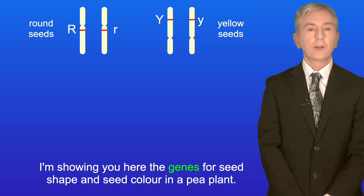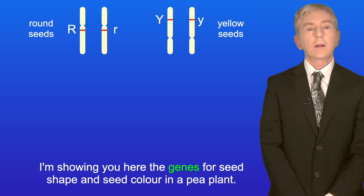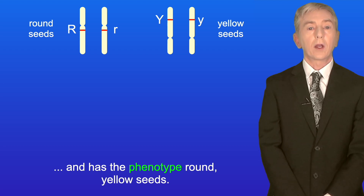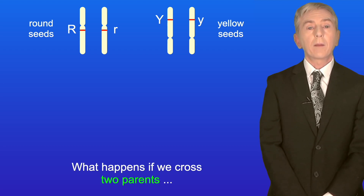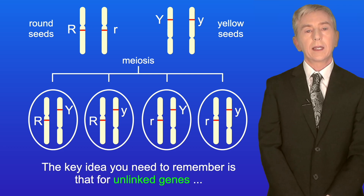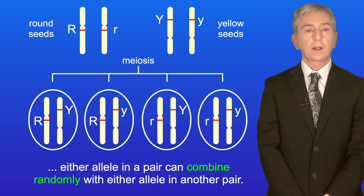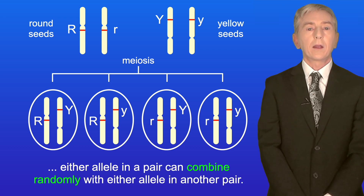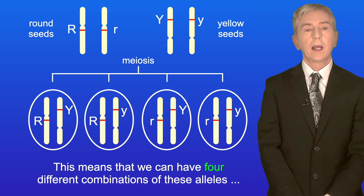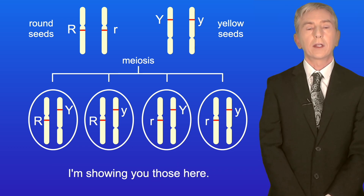Here I'm showing you the genes for seed shape and seed colour in a pea plant. This plant is heterozygous for both genes and has the phenotype round yellow seeds. The key idea to remember is that for unlinked genes, either allele in a pair can combine randomly with either allele in another pair. This is called Mendel's Law of Independent Assortment, and this means we can have four different combinations of these alleles in the gametes.